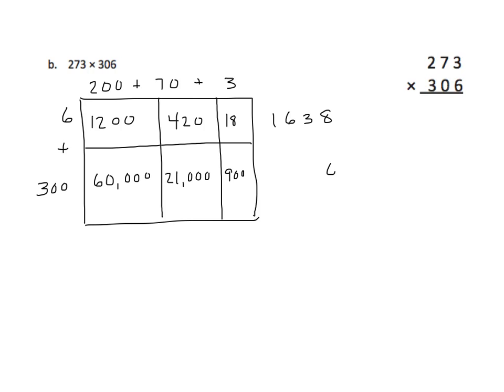Now for the hundreds partial product, I'm going to start with two zeros, because I have nothing in the tens and nothing in the ones. I have nine hundred, one thousand, and eight ten-thousands. Let's see what happens. Now let's go to our standard algorithm. I'm going to change the color so things show up better when I regroup. So six times three is eighteen — regroup my one. Six times seven is forty-two, plus one is forty-three. Regroup. Six times two is twelve, twelve plus four is sixteen. We have a correspondence between my partial products in the area model and in the standard algorithm.